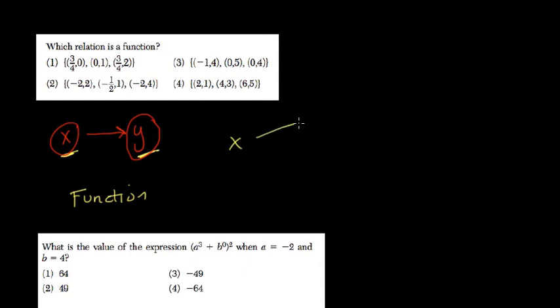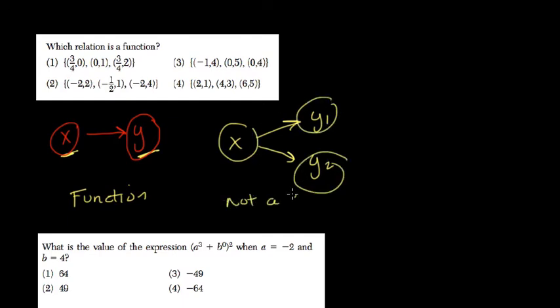So if we have one x value that's going to two different y values, y1 and y2, that's not a function. This can't happen. So this is not a function. It's a different type of relationship.